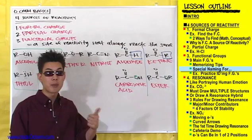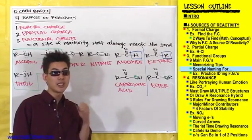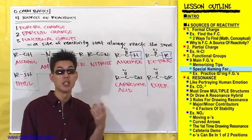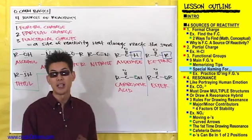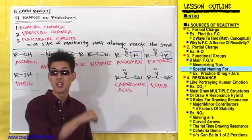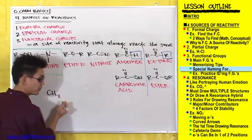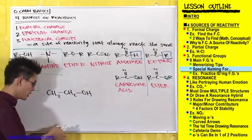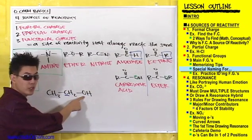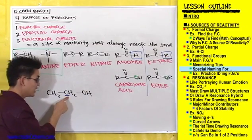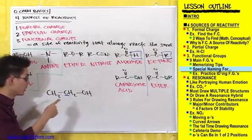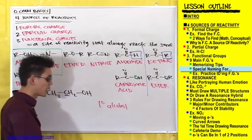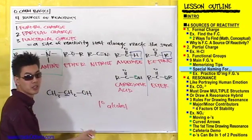Alcohols are classified as primary, secondary, or tertiary depending on how many carbons are directly attached to the carbon that's attached to the OH. For example, take CH3CH2OH — here's the carbon directly attached to the OH. How many carbons are directly attached to this carbon? Just one. So we'd call this a primary alcohol. Primary is abbreviated with a superscript zero.